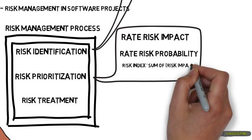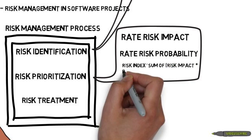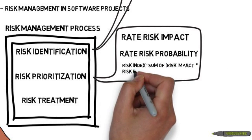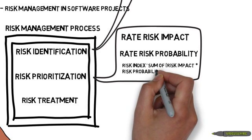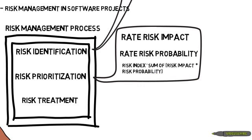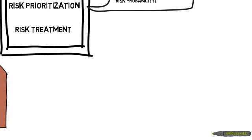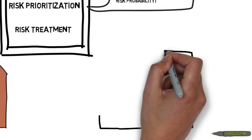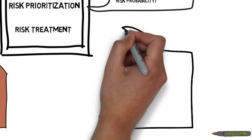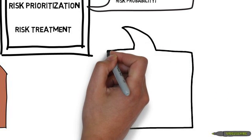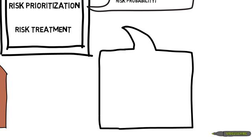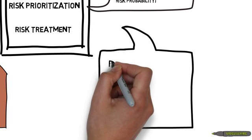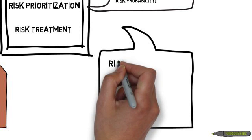When you add up the risk indices of each risk, you get the overall risk index of the project, which indicates how risky or not risky the project is.